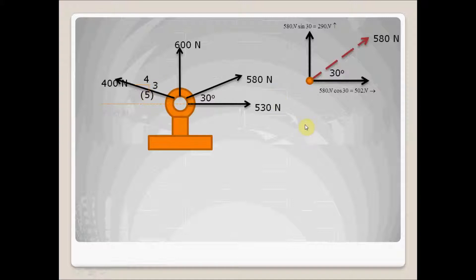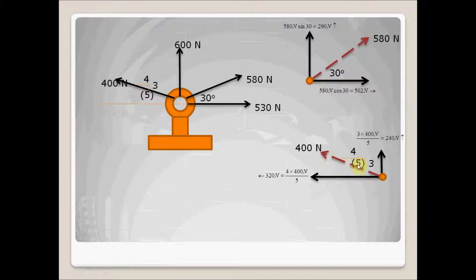Now let's resolve the second force, whose direction is given by the slope. We solve this using similar triangles. To find the vertical component, take the vertical side of the slope triangle and multiply: 3 times 400 divided by 5 equals 240 newtons acting up. For the horizontal component: 4 times 400 divided by 5. Run those through the Pythagorean theorem to verify the numbers are correct.